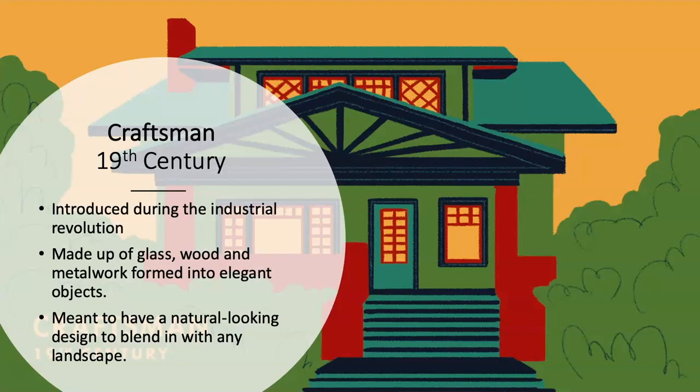Lastly, the Craftsman style of the 19th century. Built in the same time span as Victorian but with different purposes — this was more of a common man's house, built in the industrial revolution. Made of glass, wood, and metalwork formed into elegant objects, it was meant to have a natural-looking design to blend in with any landscaping. The idea was to capture nature and keep it sustainably suitable for the environment without tearing it up.